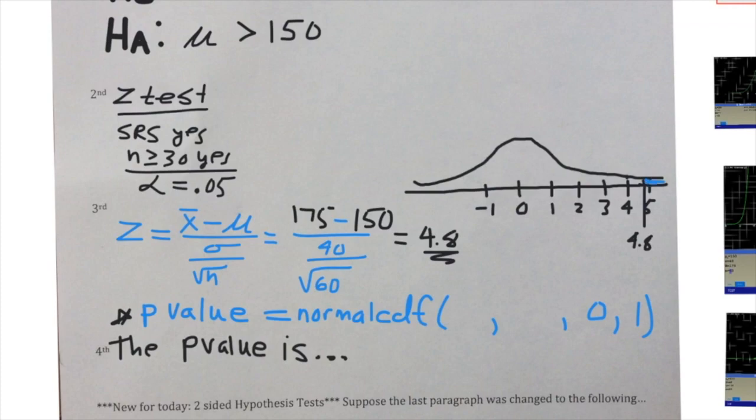So our p-value becomes this microscopic amount of probability. To figure that out on the calculator, we're going to use normalcdf to figure out how rare our sample is—how rare would it be to get a z-score of 4.8 or worse, using the average of zero and the standard deviation of one since we're on that standard curve. You end up getting a very very small probability, so small it's written in scientific notation: 6 times 10 to the negative 7.